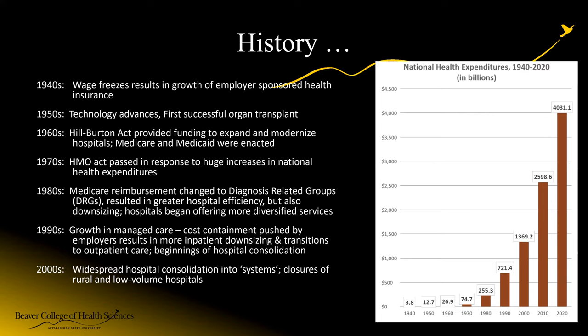When we think about trends from the 1940s through the 2000s, this helps explain changes in our national health system as well as insurance itself. In the 1940s, we saw wage freezes — times were tight — and so employers started offering health insurance as a cheaper alternative to paying more wages. We wouldn't think about that now given how expensive employment-based health insurance is. In the 1950s, we had lots of technology advances, including the first organ transplant.